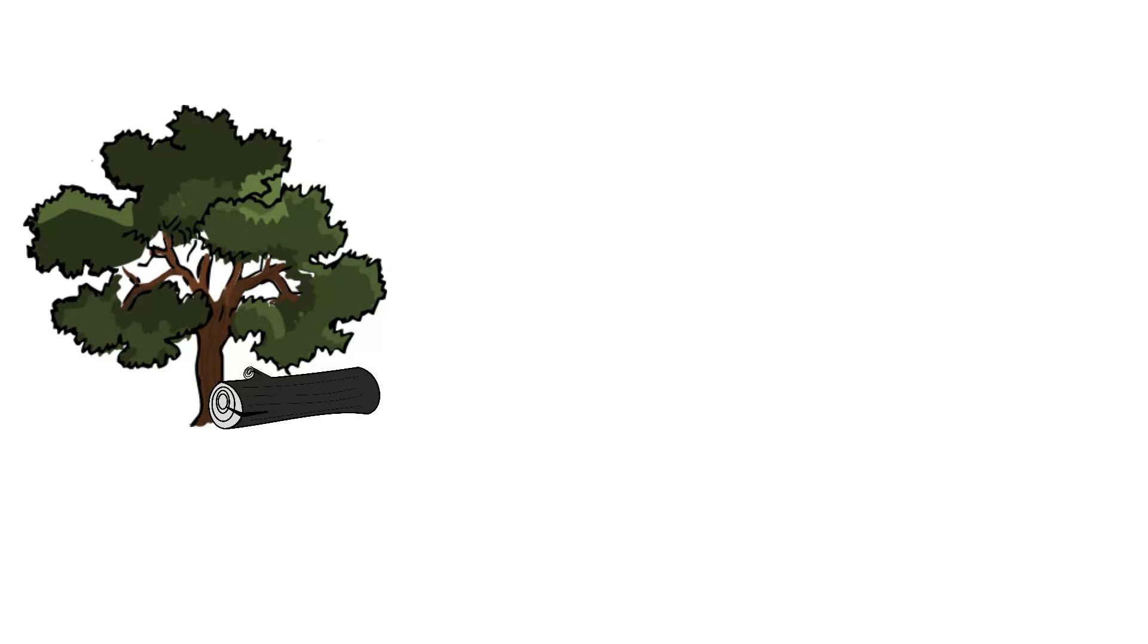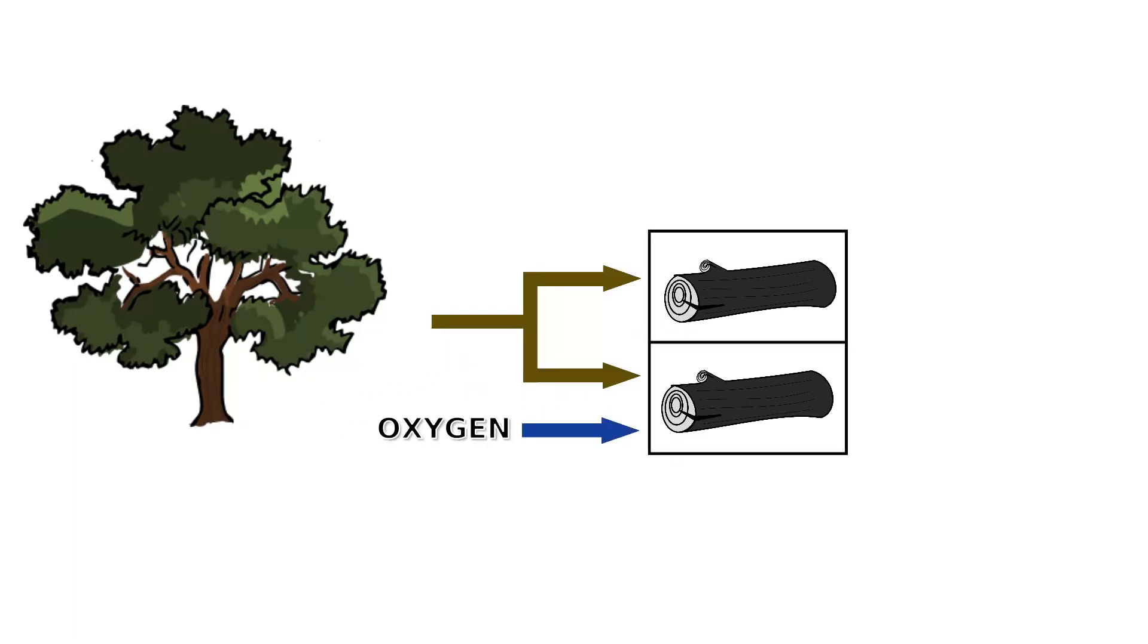First, the feedstock is loaded into two chambers. The lower chamber is burned to generate heat, which initiates the process. Once the feedstock is hot enough, it begins to pyrolyse and give off gas. Some of the gas can be redirected for storage or use. The rest is burned to keep the reaction going.